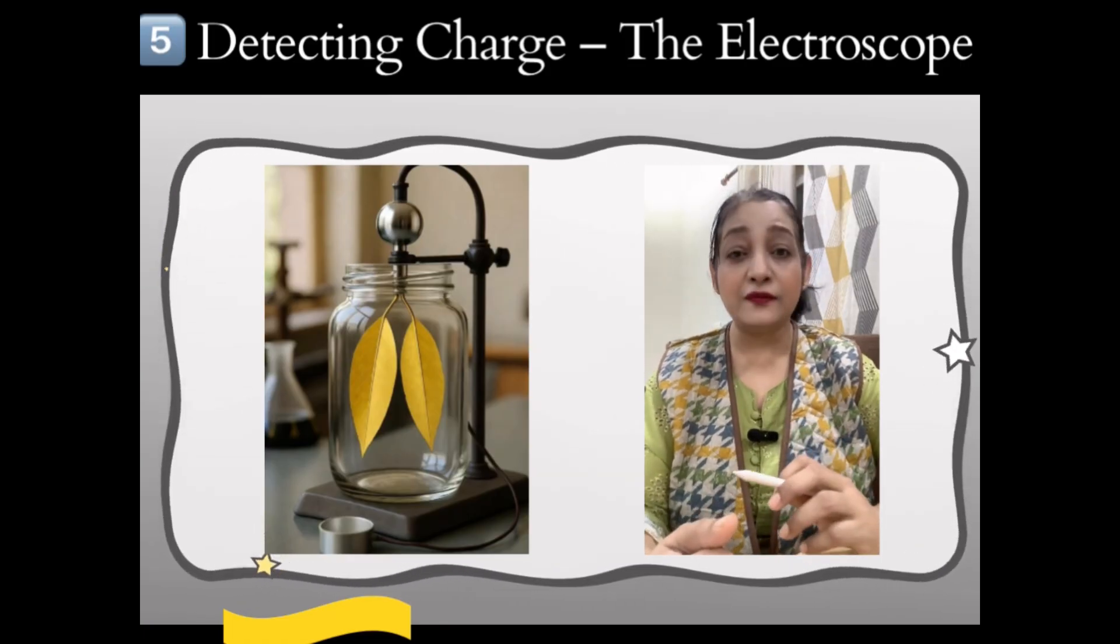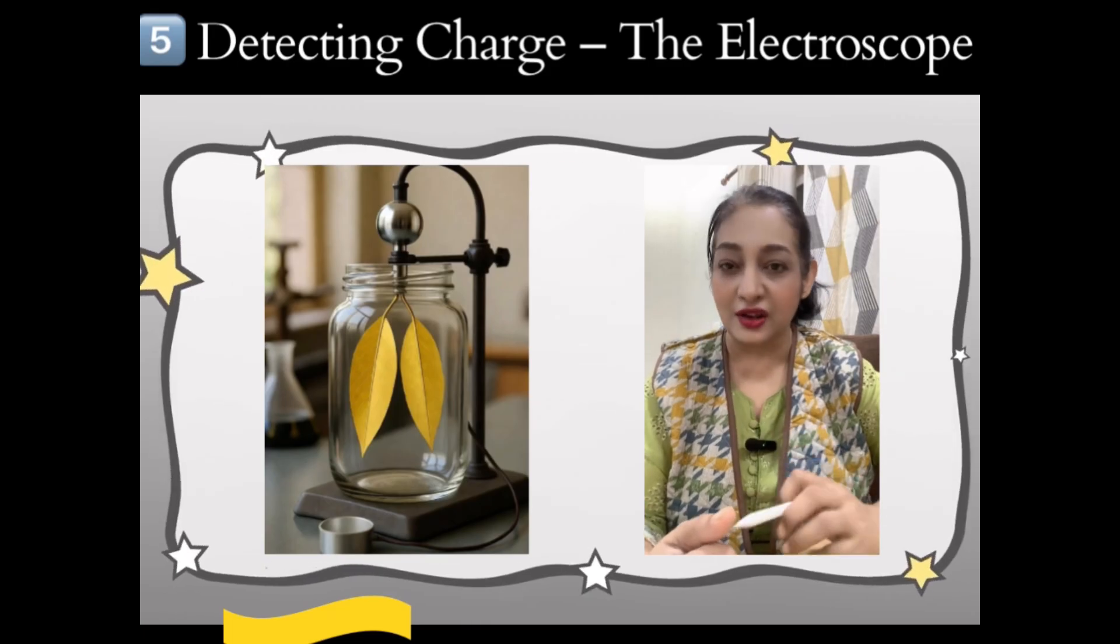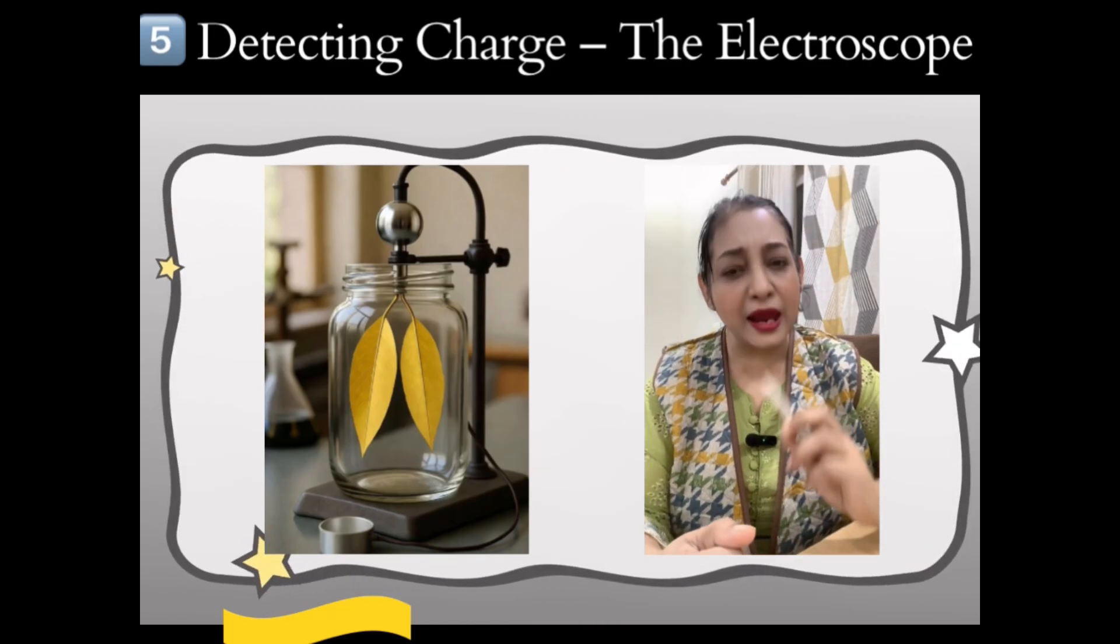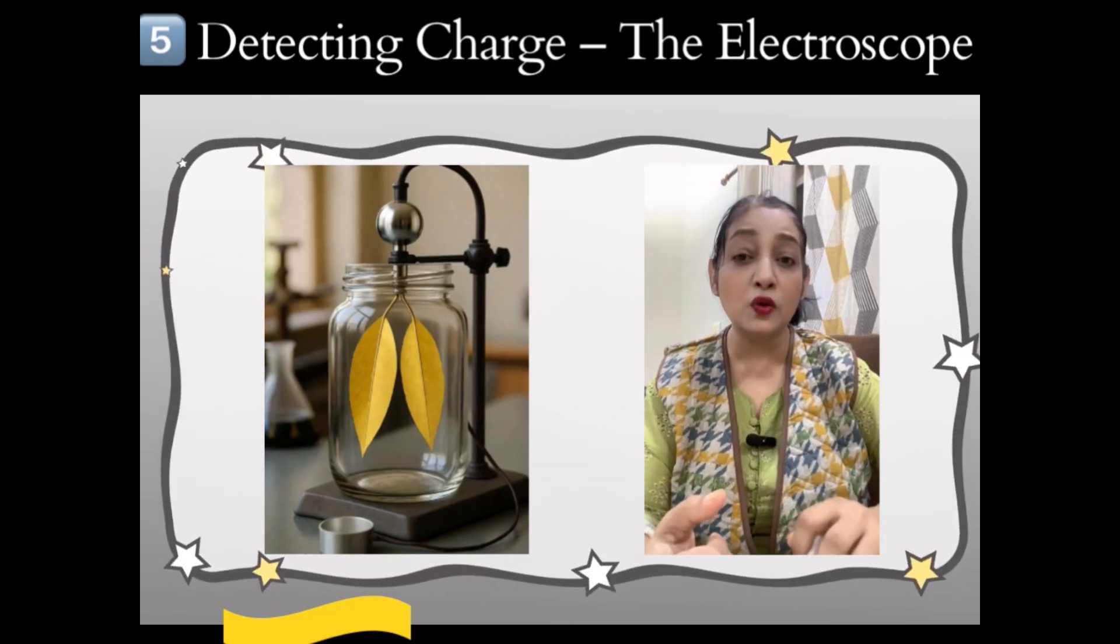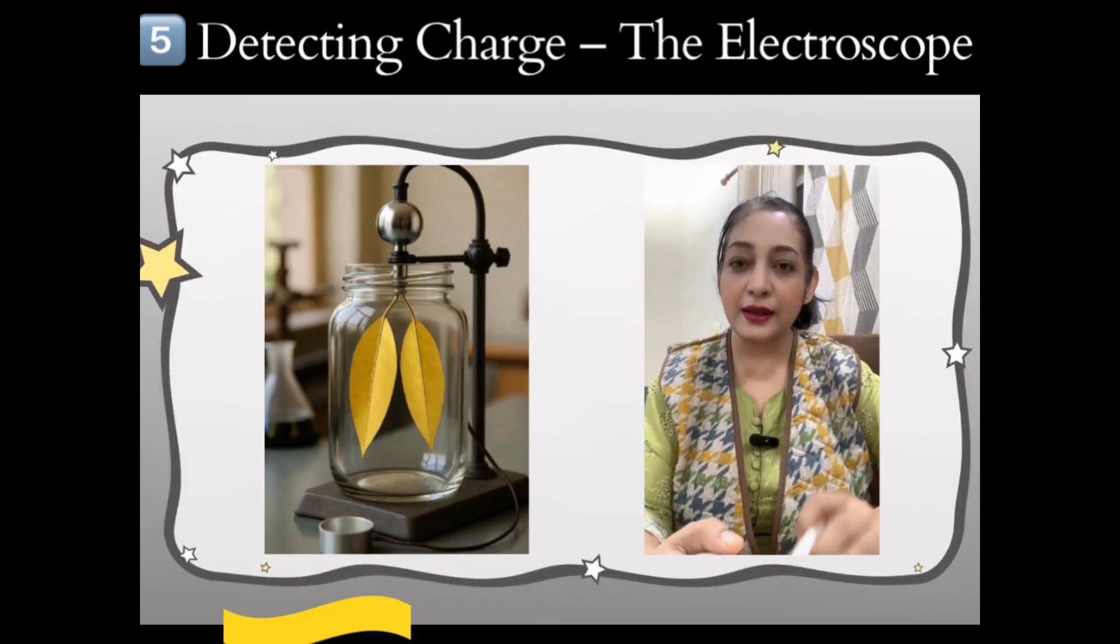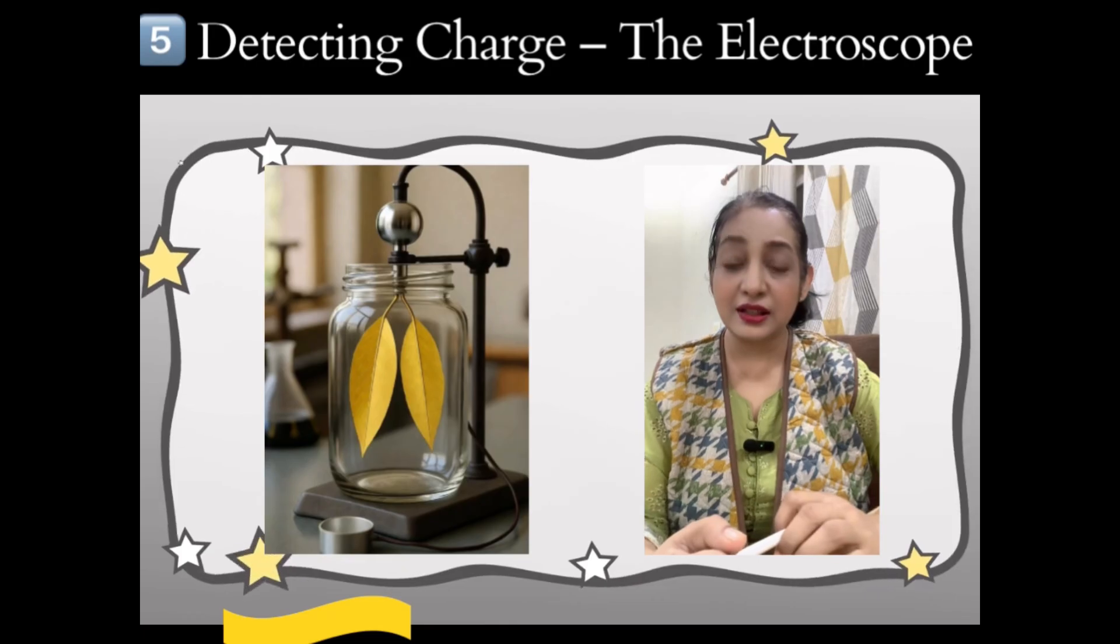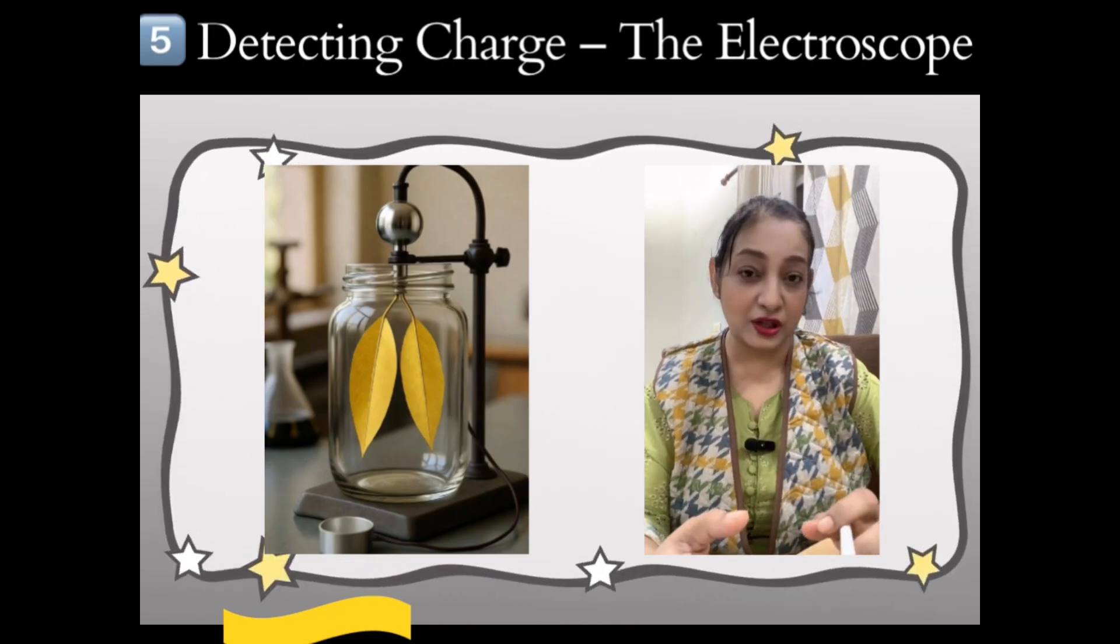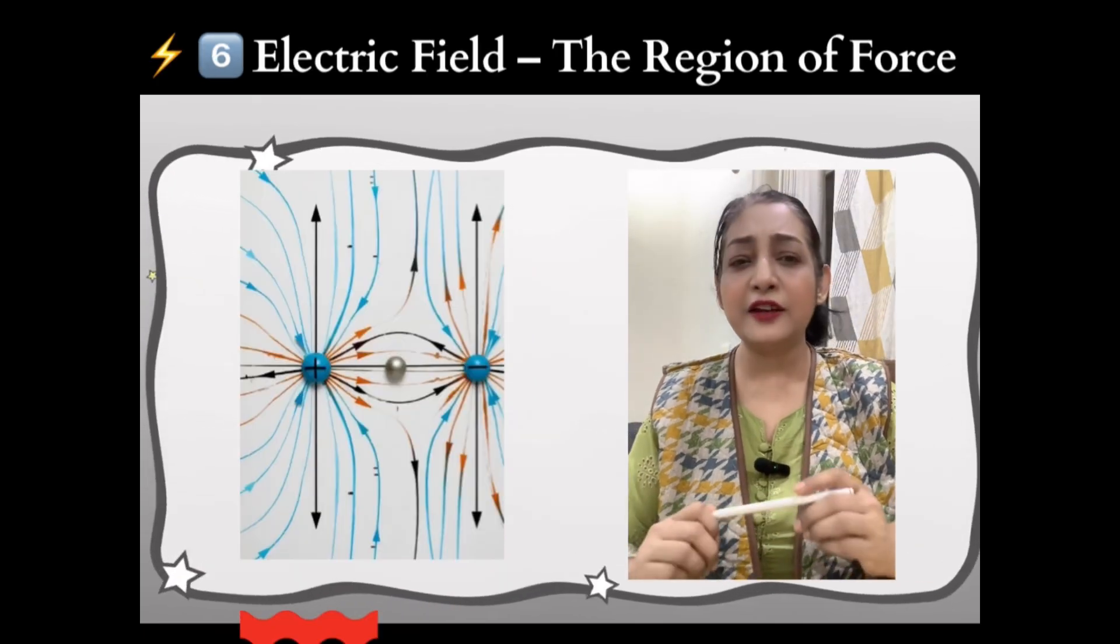The gold leaf electroscope is used to detect static charges. How it works: metal plate on top collects charge, charge travels down to the metal leaves, leaves repel each other when charged. The greater the separation, the stronger the charge. An electric field is the region where a charged object exerts a force on another charge.